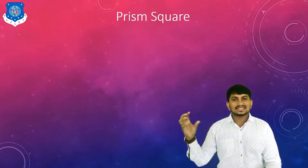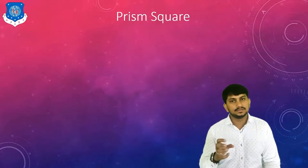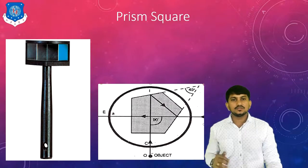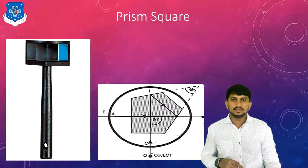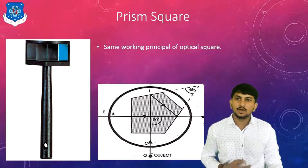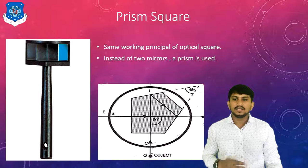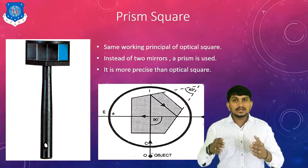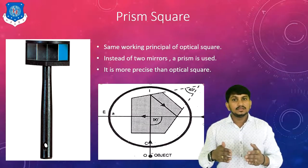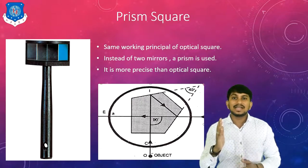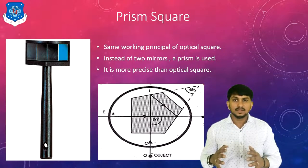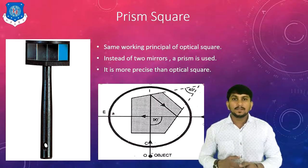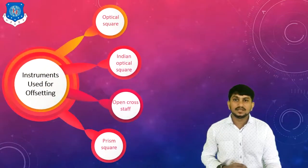Now let's move to the last instrument, the prism square. As the name suggests, it includes a prism. You can clearly see one prism fitted at the top of the handle, having two reflecting surfaces at a 45-degree angle. The principle of working is similar to the optical square, but instead of two mirrors, one prism with two reflecting surfaces is provided. It is more precise than the optical square because the prism angle does not change, ensuring accurate perpendicular offsets.